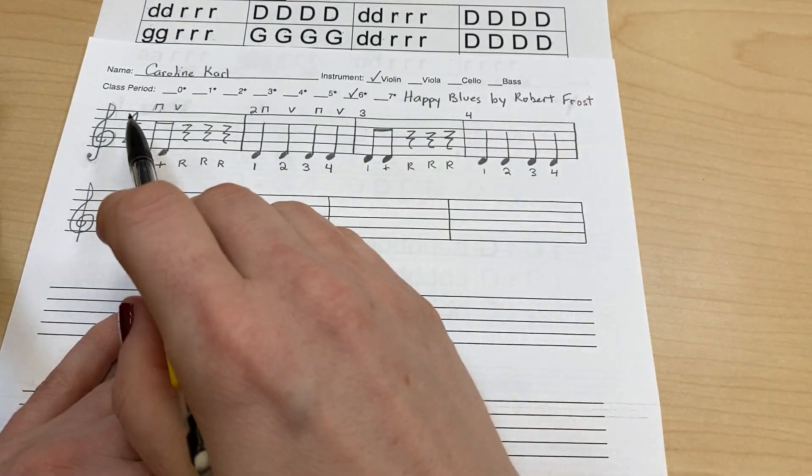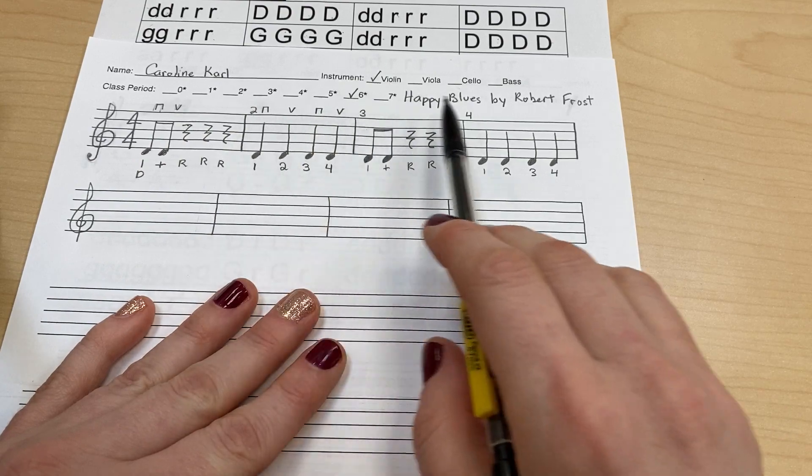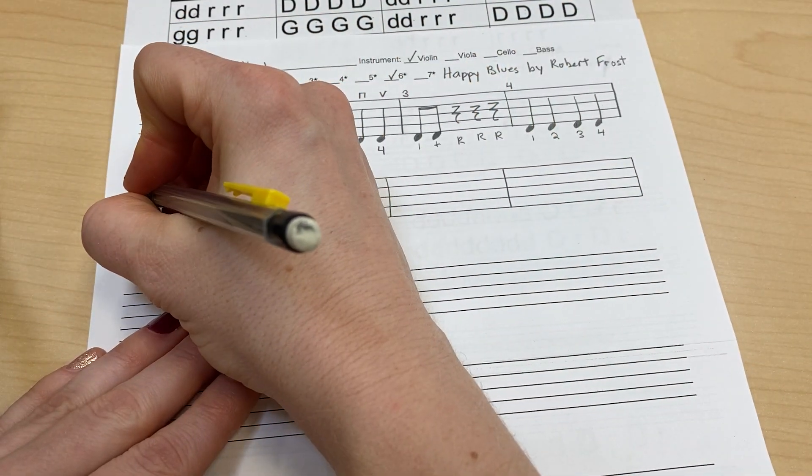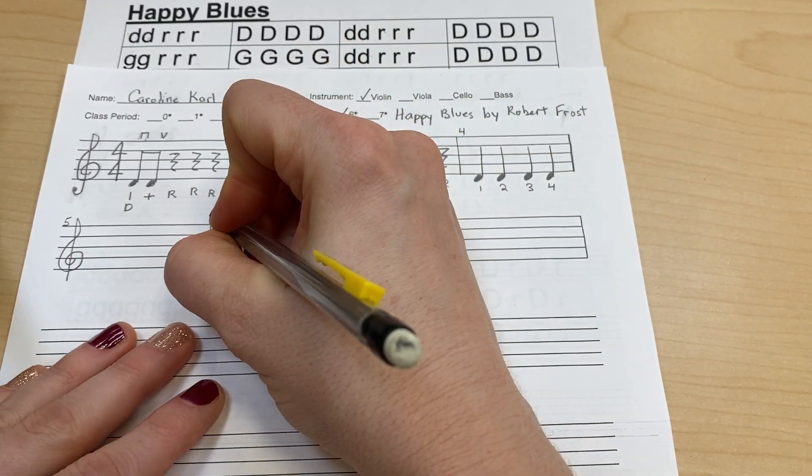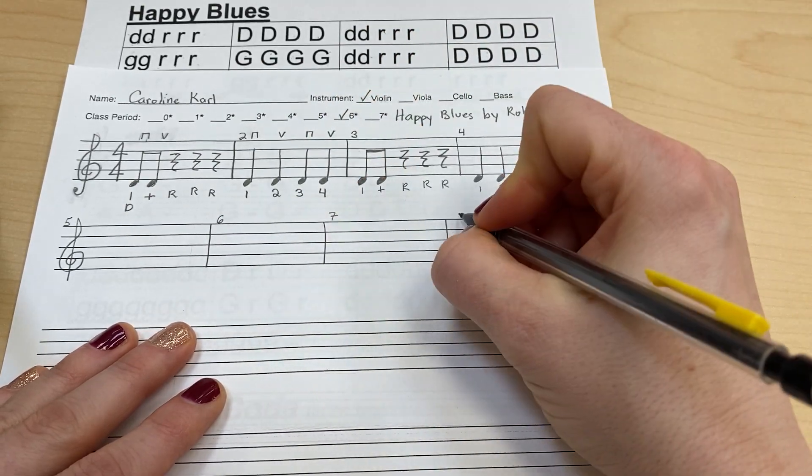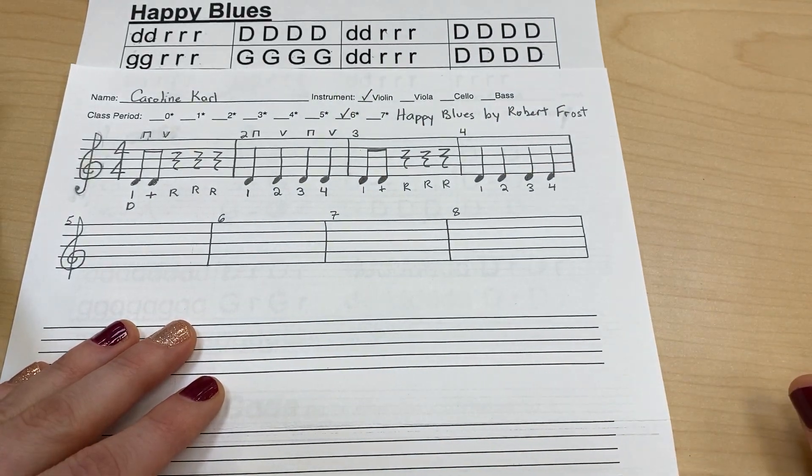I'm going to number them. So at the top line, we had measures one, two, three, and four. So this starts with five, six, seven, and eight. Good.